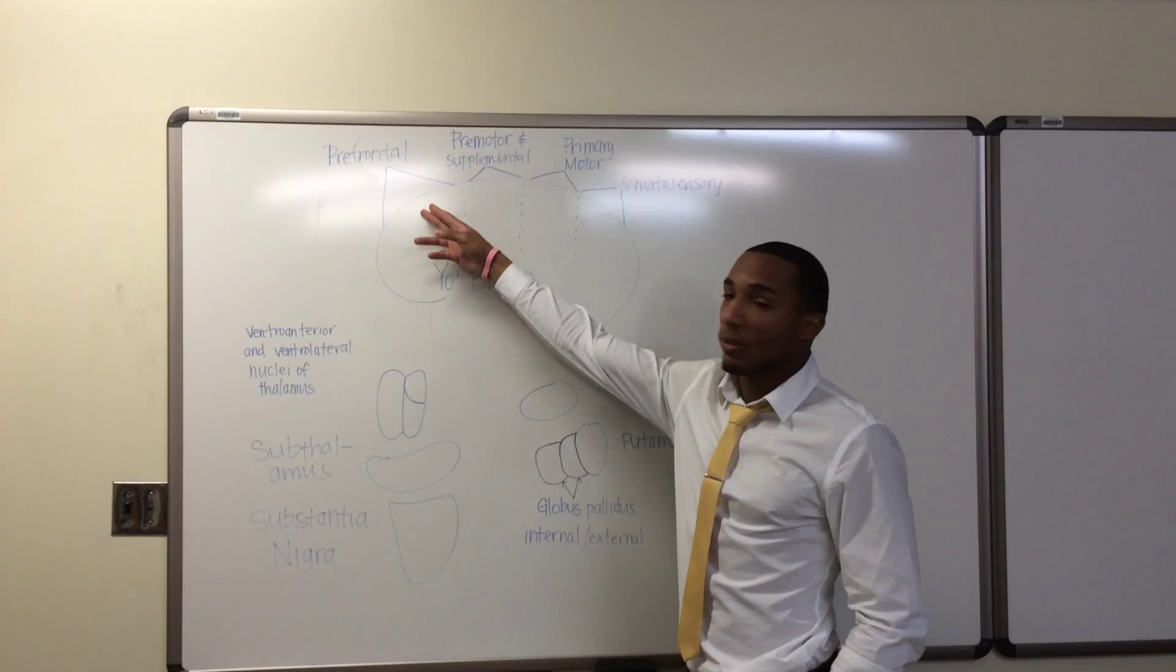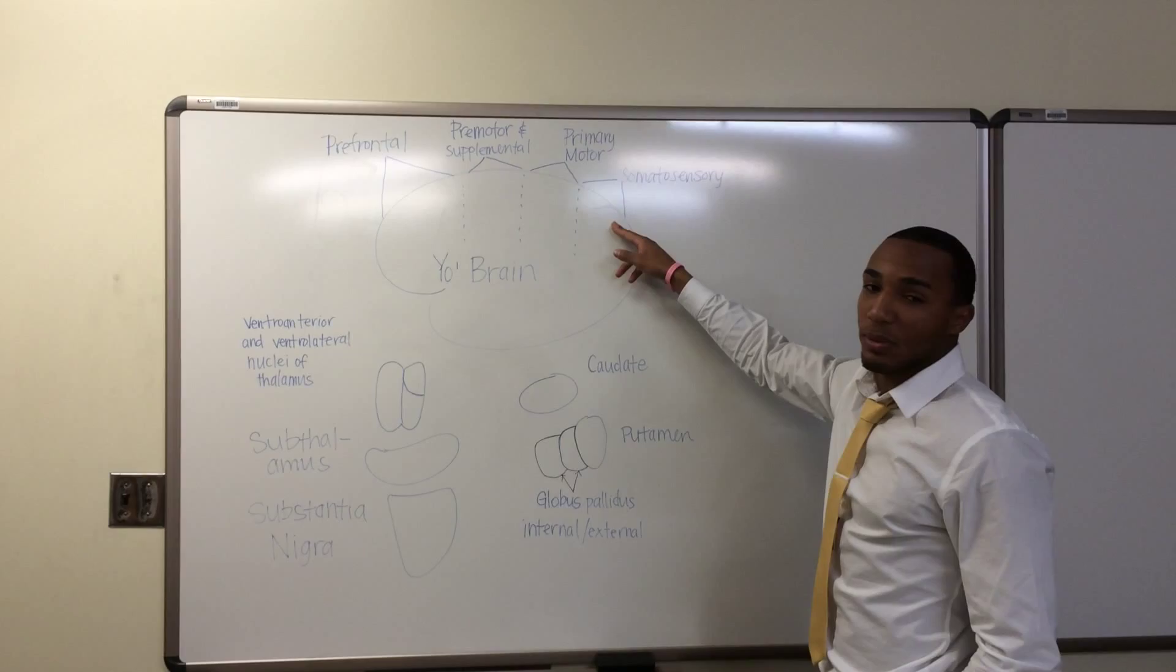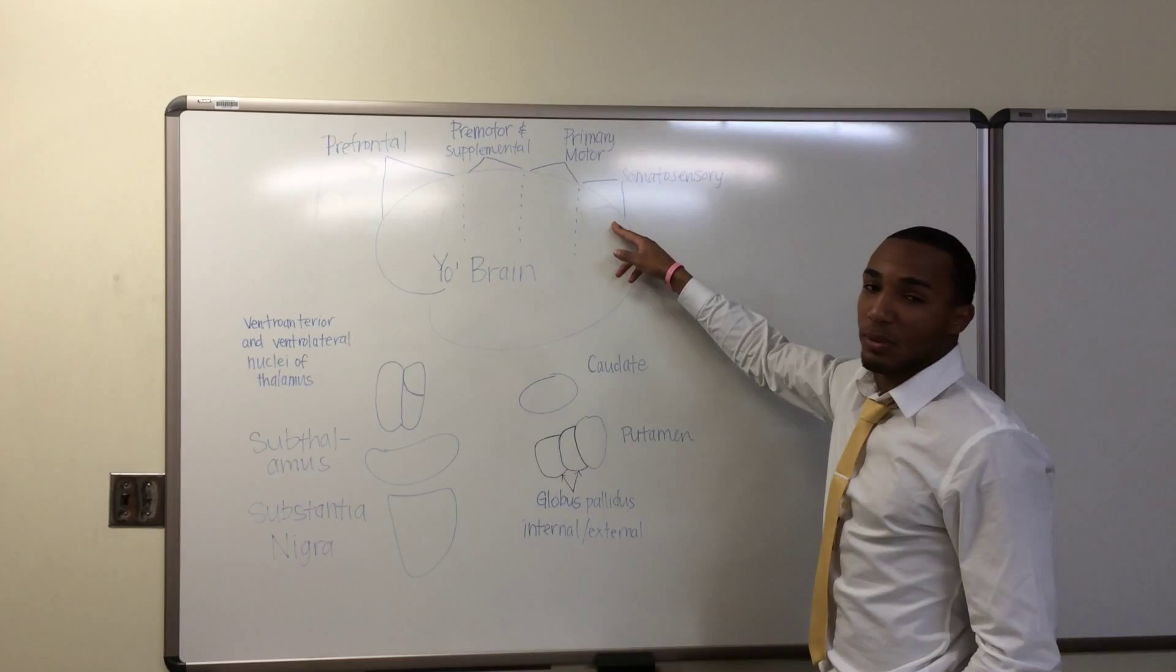Hello ladies and gentlemen. This is the motor cortex. It is divided into four divisions: the prefrontal, the premotor and supplemental, the primary motor, and the somatosensory area.